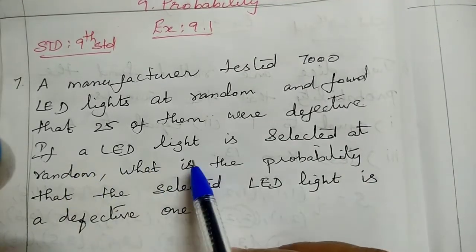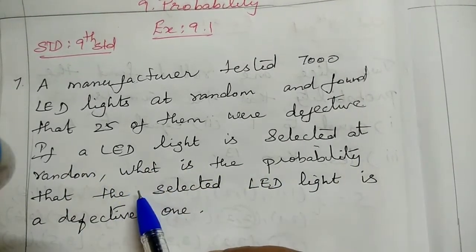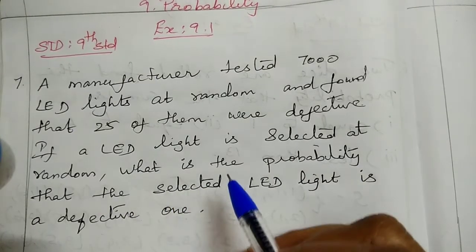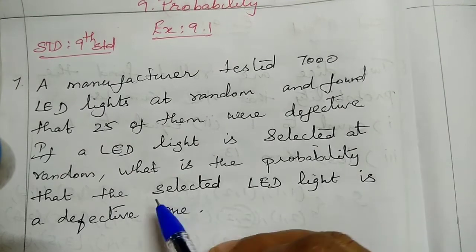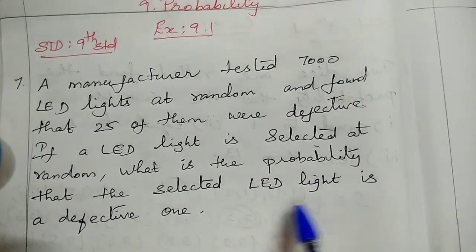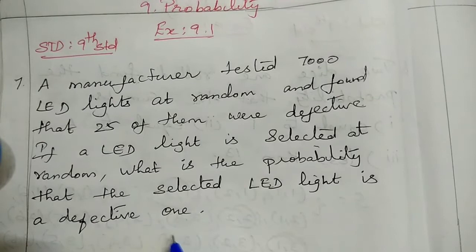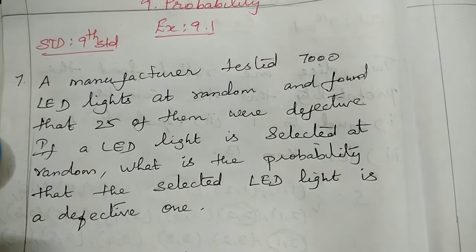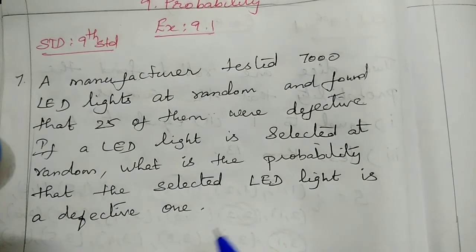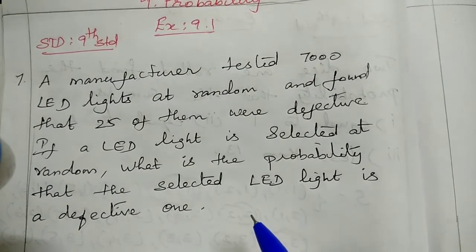If a LED light is selected at random from these 7000 LED lights, what is the probability that the selected LED light is a defective one? We need to find the probability of selecting a defective light.